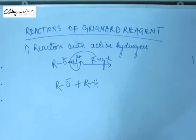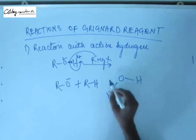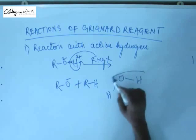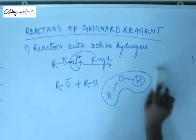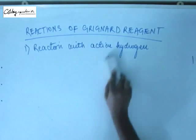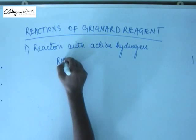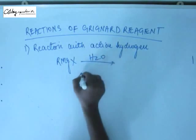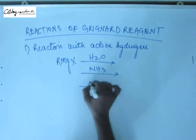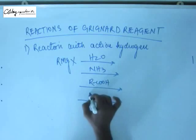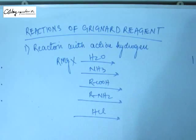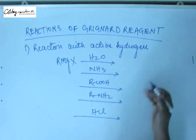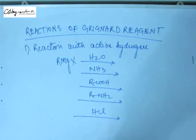Since water has active hydrogen (hydrogen attached to oxygen), Grignard reagent cannot be kept open or in the presence of moisture — it will very quickly react with that hydrogen. Grignard reagent reacts with water, ammonia, carboxylic acid, amines, or any kind of acid, and the result will always be formation of an RH bond — always resulting in formation of an alkane.